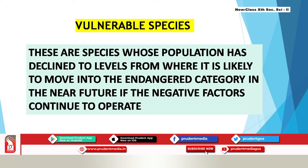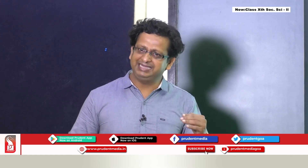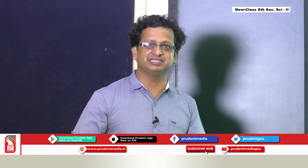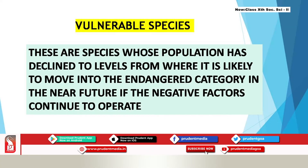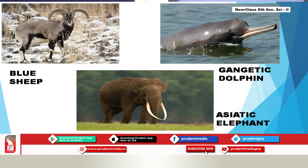Vulnerable species are those whose population has declined to a level from which they are likely to move into the endangered category. If negative factors continue to operate against them, they may become endangered. Examples include the blue sheep, Gangetic dolphin, and Asiatic elephant.